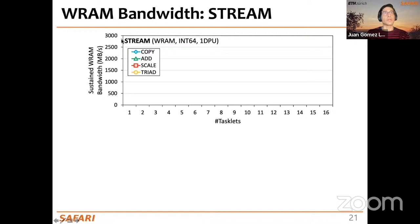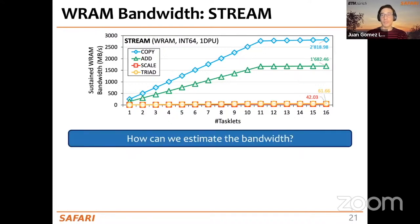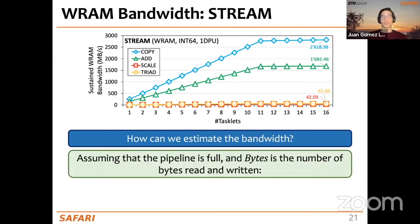Here are the results. The plot shows sustained WRAM bandwidth in megabytes per second over the number of tasklets, varying from 1 to 16. These are the results for copy, add, scale, and triad. We can also estimate the bandwidth analytically, which helps us understand the architecture better. The sustained WRAM bandwidth in all cases saturates at 11 tasklets, as we expected.